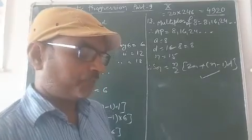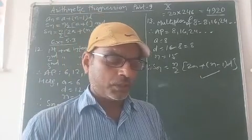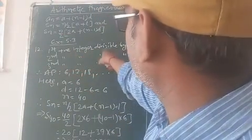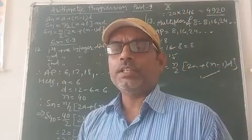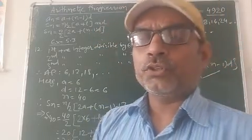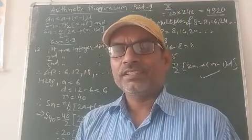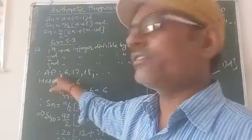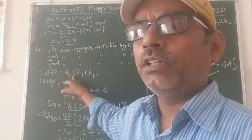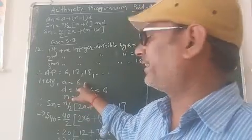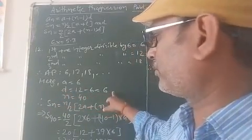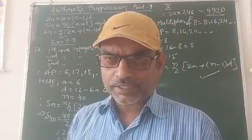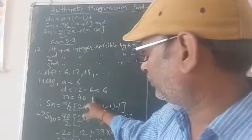Next question is question number 12. Find the sum of first 40 positive integers divisible by 6. As you know, the first positive integer divisible by 6 is 6, second is 12, third is 18. Then the AP is 6, 12, 18, and so on. Here the first term is 6, common difference d equals 12 minus 6 equals 6, and we have to find the sum of first 40 terms. Therefore n equals 40.